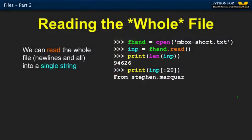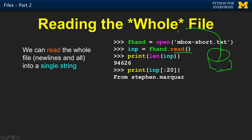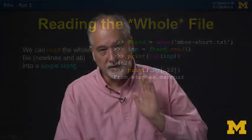In this case we're reading mbox short dot text and reading the whole thing into a string — that takes all the characters and sticks them in. We got 94,626 characters. And we can print with slicing: start at the beginning up to but not including the 20th character, so that's the first 20 characters from that file as a single string. Sometimes we'll use that, sometimes we'll write a for loop, depending on what we're trying to achieve.